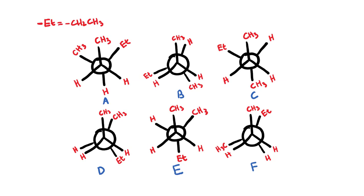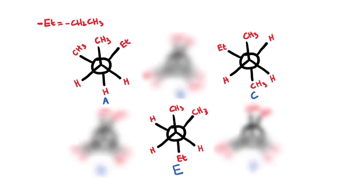Staggered conformations are always going to be more stable than eclipsed conformations. So let's go ahead and try to rank the following Newman projections from the most stable to the least stable. Because we're starting with the most stable, we're going to focus our attention on the staggered conformations. When we're comparing letters A, E, and C, we can see that letter A has quite a bit of crowding because we have the methyls and the ethyl group all next to each other — that is referred to as two groups being gauche to each other.